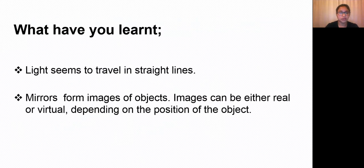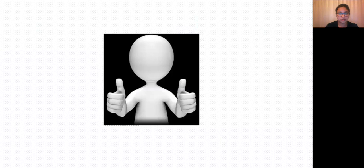To summarize what we have learned: light travels in straight lines, and mirrors form images of objects. An image can be real or virtual depending on the position of the object. In the next class, we will learn more about spherical mirrors and their image formation. Thank you.